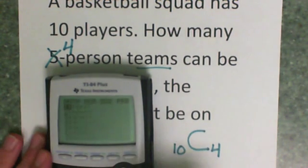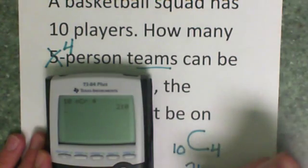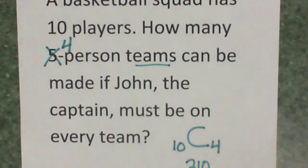So from those ten, I'm going to pick four. Ten, math, over to probability, down to NCR, and choose choice four. So there are 210 teams that has John as a captain and has four other players.